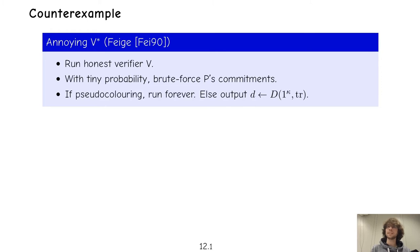When running with the honest prover, the verifier will be efficient because the tiny probability is not a problem for expected-polytime V and it will never see a pseudo-coloring. However, if we run this verifier with the simulator, it might happen that the verifier breaks the commitment scheme and sees the pseudo-coloring, in which case the simulator would run the verifier to its end — which is forever — and so the simulator itself would run forever.